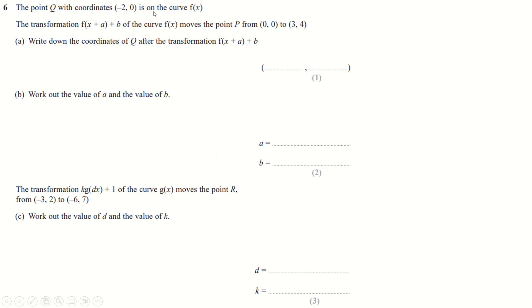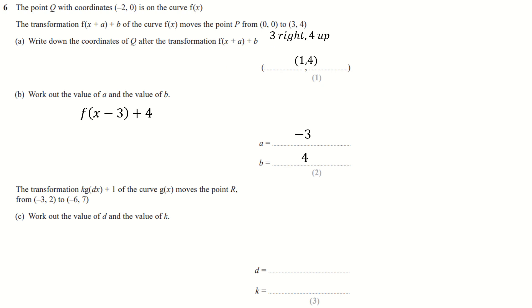The point Q has these coordinates on the curve, and we're going to move this curve A to the left and B up, and we get this. It's clearly gone three to the right and four up. Every point is transformed by the same amount, so this is also going to go three to the right and four up. Three to the right for minus two is positive one, and four up is four — so it's going to be at (1, 4). And A, B — it's going three right and four up, so we add four at the end. Remember this is going to be take away three to make it go right — the function always goes in the opposite direction to what you think if it's inside the brackets.